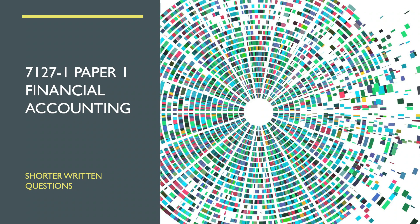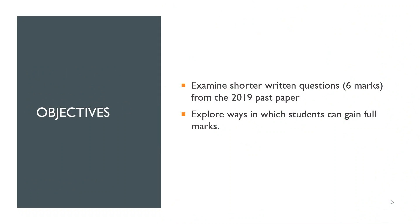I'm going to take a look at some shorter written questions now. I'm going to use questions that came from the 2019 Paper 1, Financial Accounting, to get going. But some of these tips will apply whether you're doing Paper 1 or Paper 2. A lot of the information and suggestions are quite generic. So what I plan to do is look at those questions and help you find ways to gain more marks.